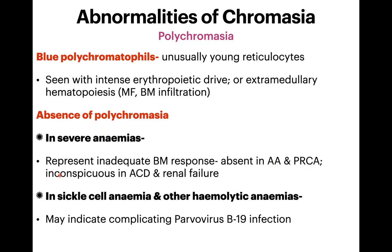Polychromasia will be very inconspicuous in anemia of chronic disease and renal failure because erythropoietin drive is low — so despite severe anemia, polychromatophils will not be present. Also, in sickle cell anemia and other hemolytic anemias where increased polychromatophils are regularly seen, if they suddenly disappear, this may indicate a complicating parvovirus B19 infection.